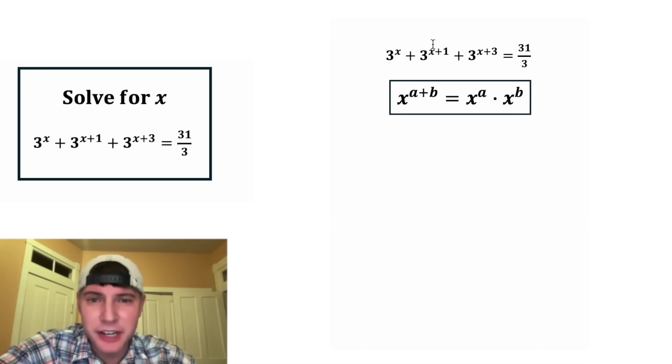So this three to the power of x plus one is going to change into three to the x times three to the one. And this three to the x plus three is going to change into three to the x times three to the three. So these both changed using these notes. And then this three to the x, we can bring it down and we can bring down the 31 thirds.